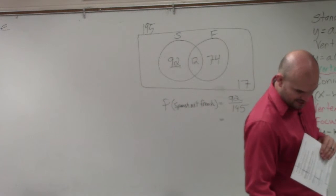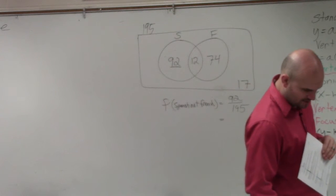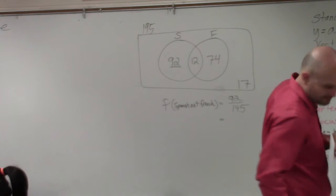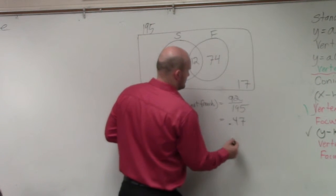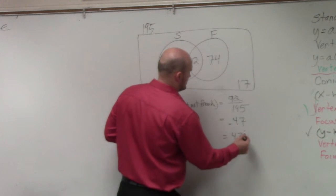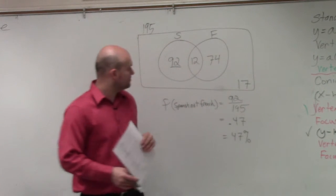So then I'll just take 92, divide it by 195, and I get 0.47, 47%.